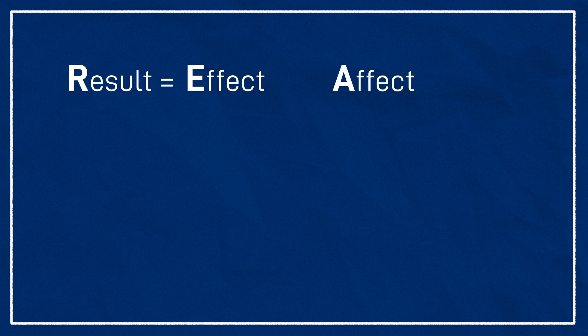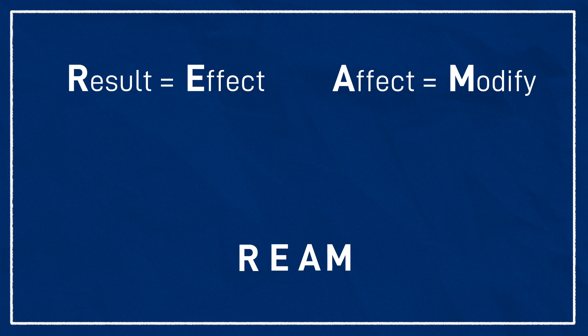So here's my trick to help you. We're going to find some other words that we can swap them out with, and then you can test which one makes more sense in your sentence. The two words are 'result,' which roughly means the same as 'effect,' and for 'affect' we have 'modify.' We can remember these by using the acronym REAM — R-E-A-M.